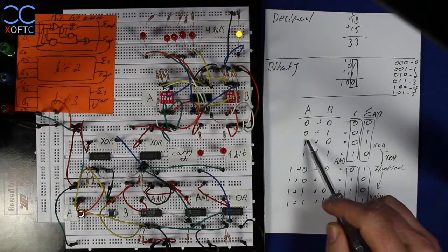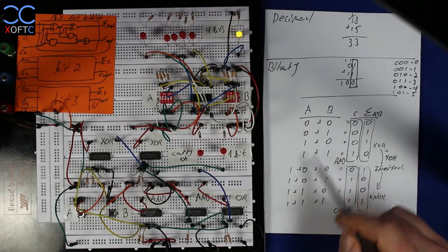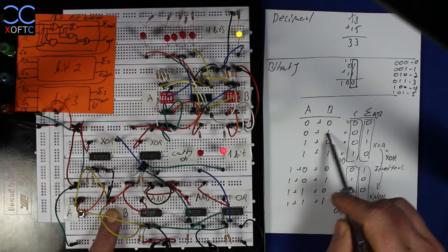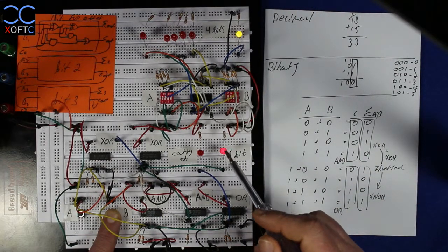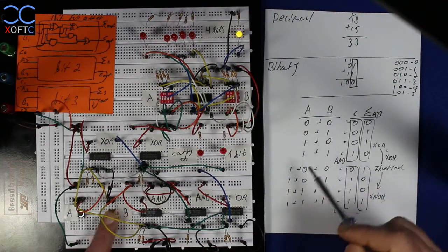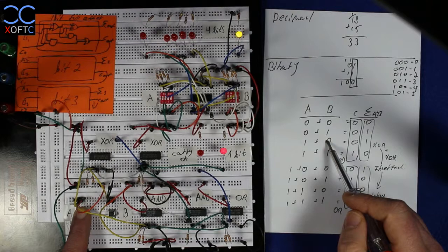It could be that A is 0 and B is 1. We get 0 plus 1 is 1. And we get a 1 on the sum and 0 on the carry-on. And that goes the same if A is 1 and B is 0.